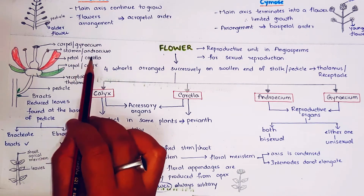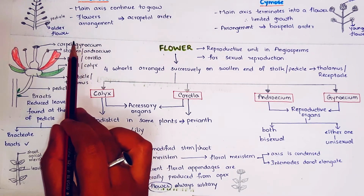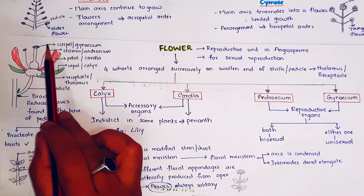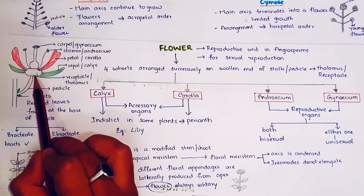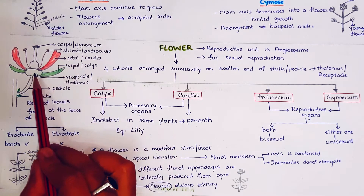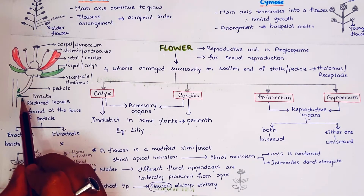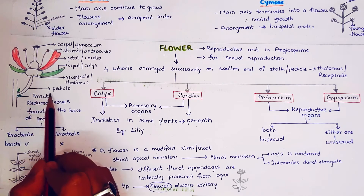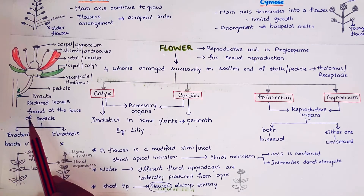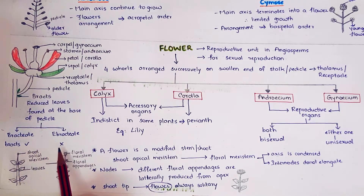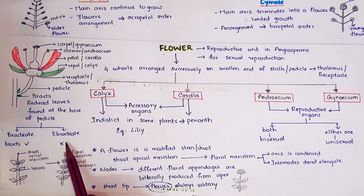Calyx is also called sepal. Corolla is called petal. Androecium is also called stamen. Gynoecium is also called carpel. These floral appendages are arranged in four whorls on the receptacle or thalamus, which is attached to the stalk, that is the pedicel. Bracts are reduced leaves found at the base of the pedicel. In some flowers bracts are present and in some flowers bracts are absent. Flowers with bracts are called bracteate and flowers without bracts are called ebracteate.